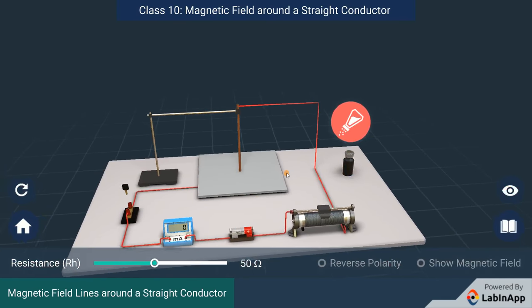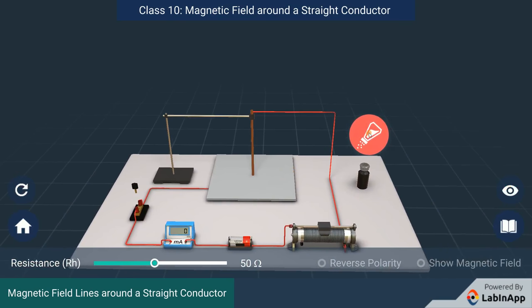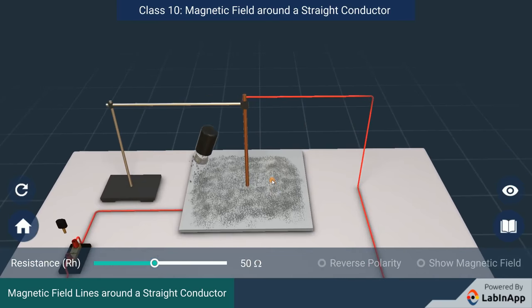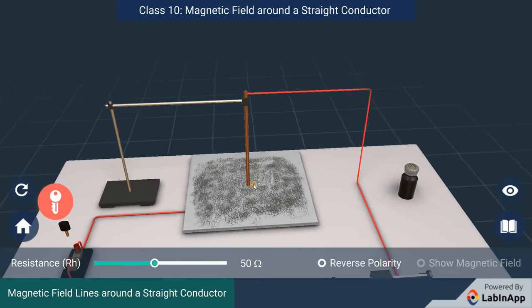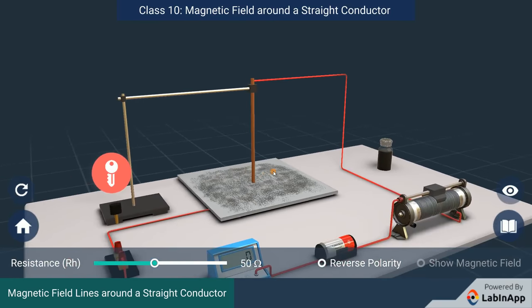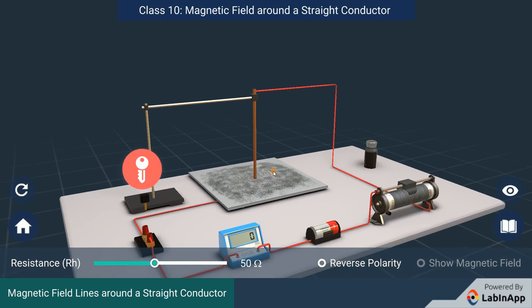Sprinkle iron filings around the conductor. Insert the plug key and observe.